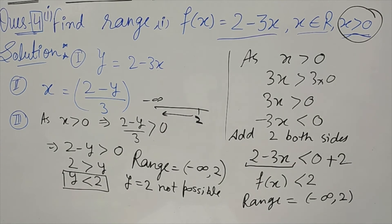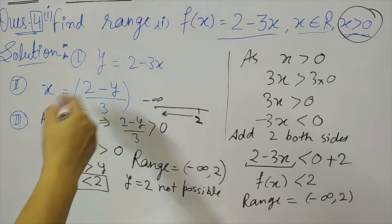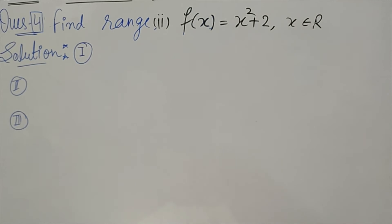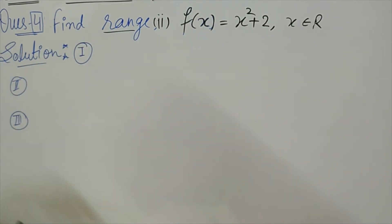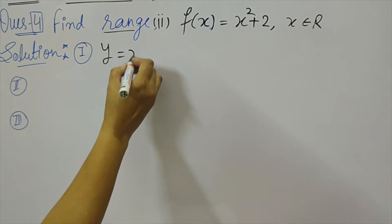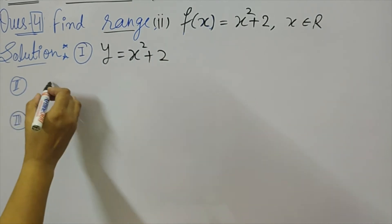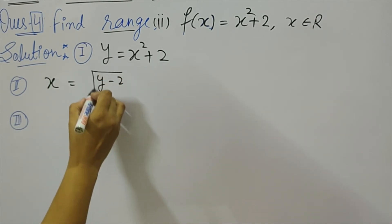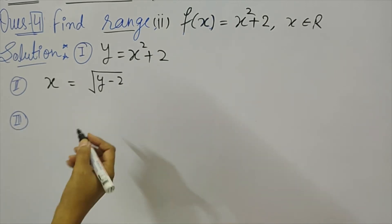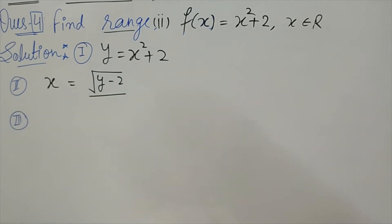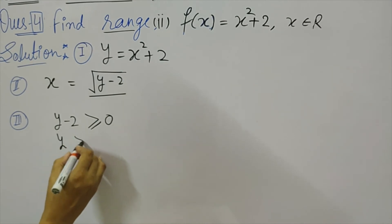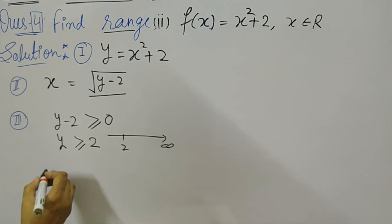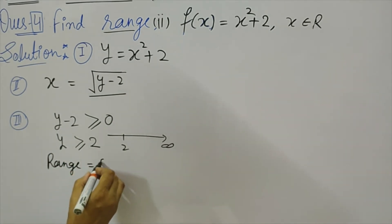So for simple functions you can calculate the range either directly or by the routine method. For question 5 second part: f(x) = x² + 2, where x is any real number. Using the routine method: let y = x² + 2, then x² = y − 2, so x = √(y − 2). For x to be real, the expression inside the square root must be ≥ 0, giving y ≥ 2. So the range is [2, ∞).